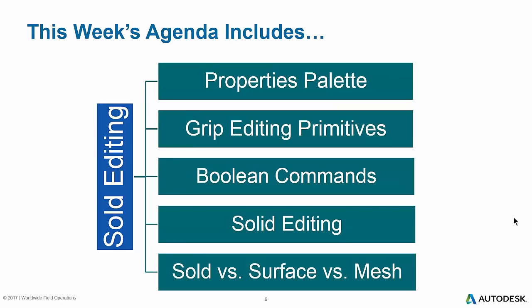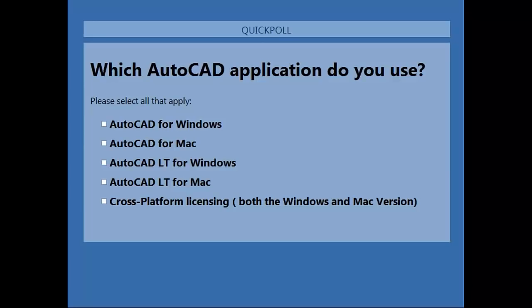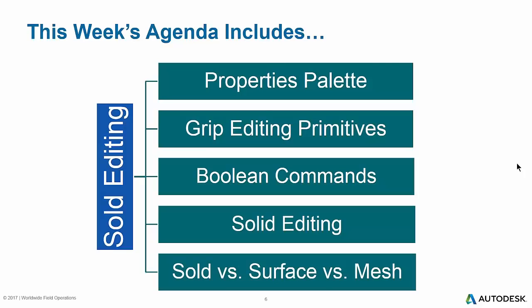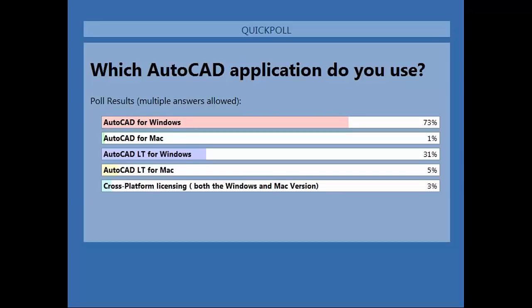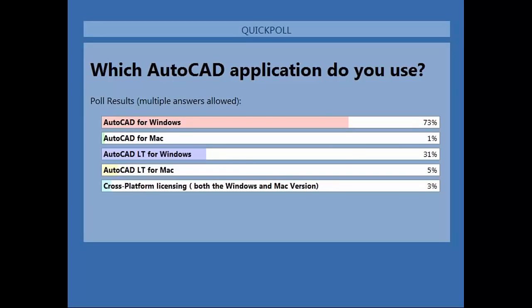What we'd really like to know is which AutoCAD application you are using. This is a fairly important one because if you're using the LT, you may be lacking some of the substance of this webinar. If you are using LT, this may be an option to consider getting the AutoCAD full version if you see some features you really like in 3D. It seems like 73% of folks are working with AutoCAD for Windows, and 31% AutoCAD LT for Windows.